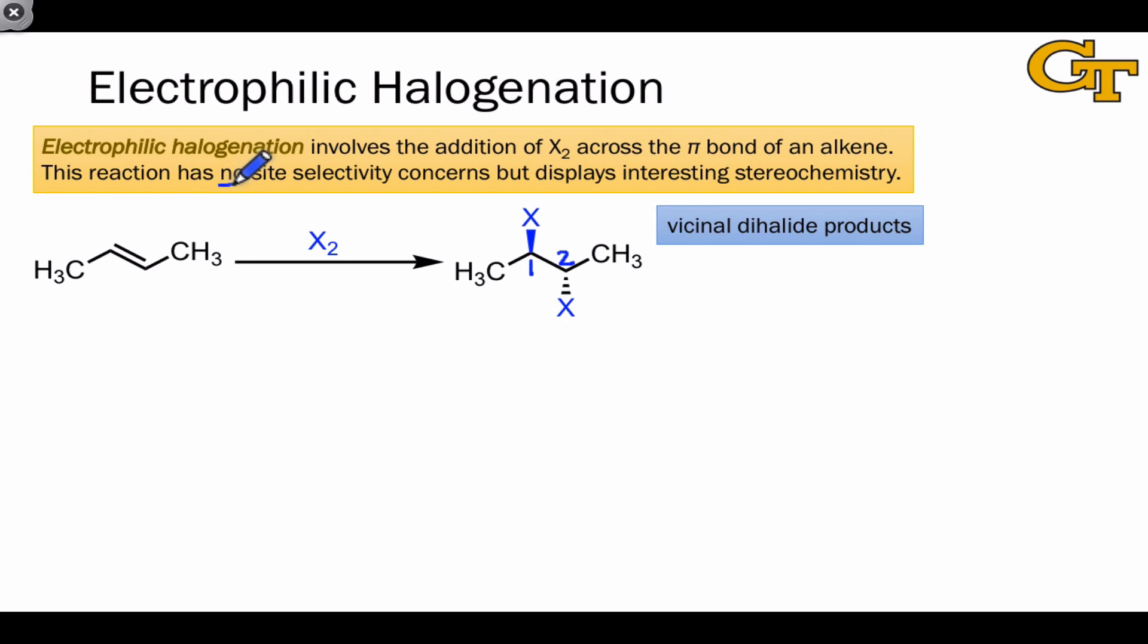There's no site selectivity issue here since the bonding pattern at both carbons of the alkene is the same. It is important to pay attention to the stereochemistry. One of the halogens is above the plane of the alkene and the other is below the plane. This corresponds to anti-addition, and this is the rule for electrophilic halogenation reactions. No syn products are observed.